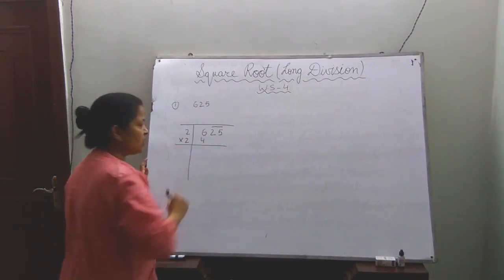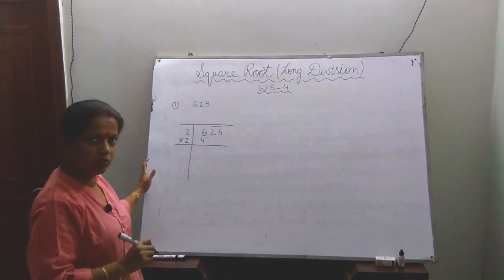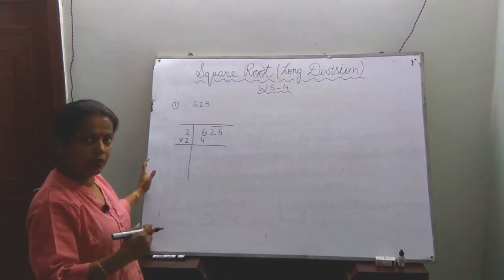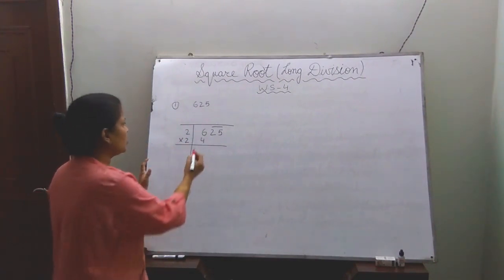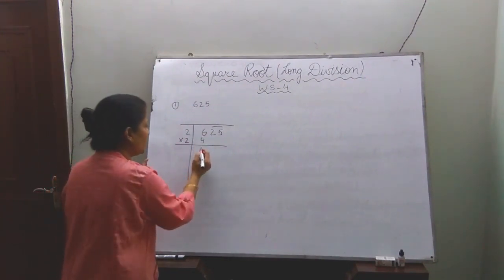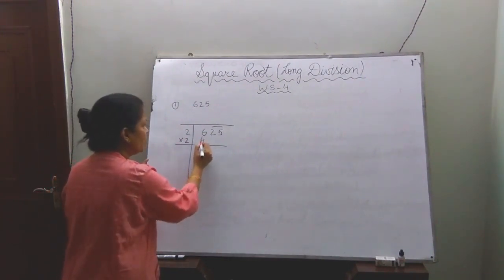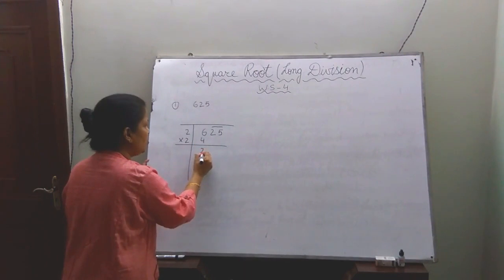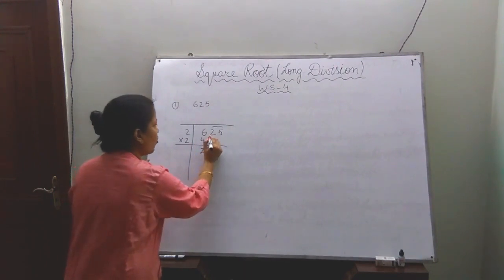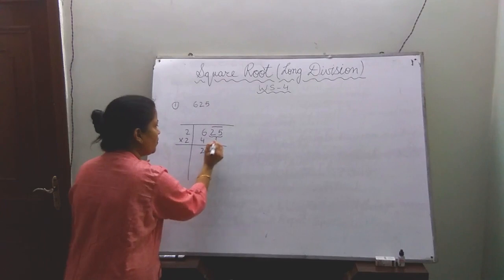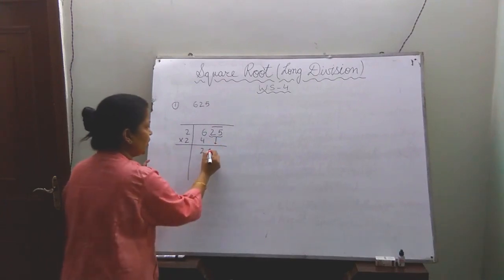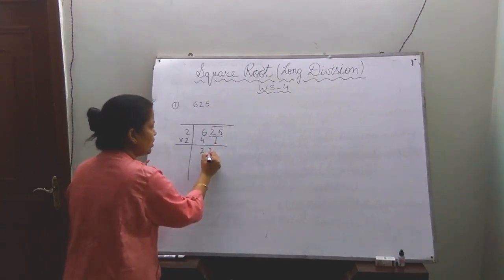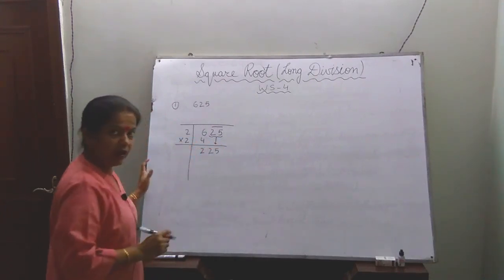Now, same as in division, you subtract it — so it will come to 2. Now copy this pair together, so it becomes 25.